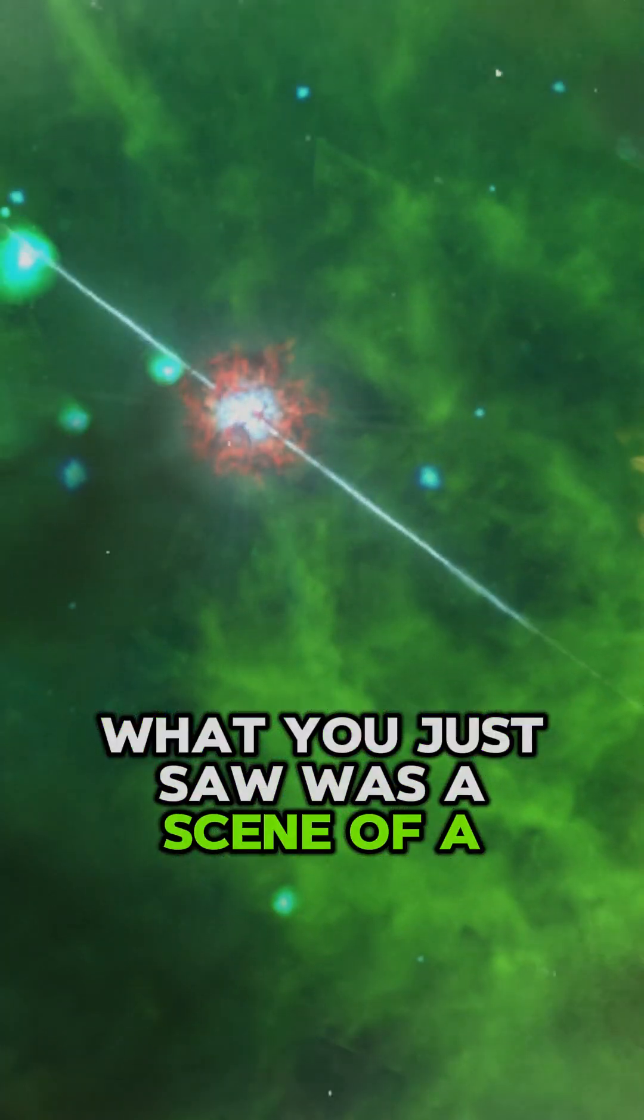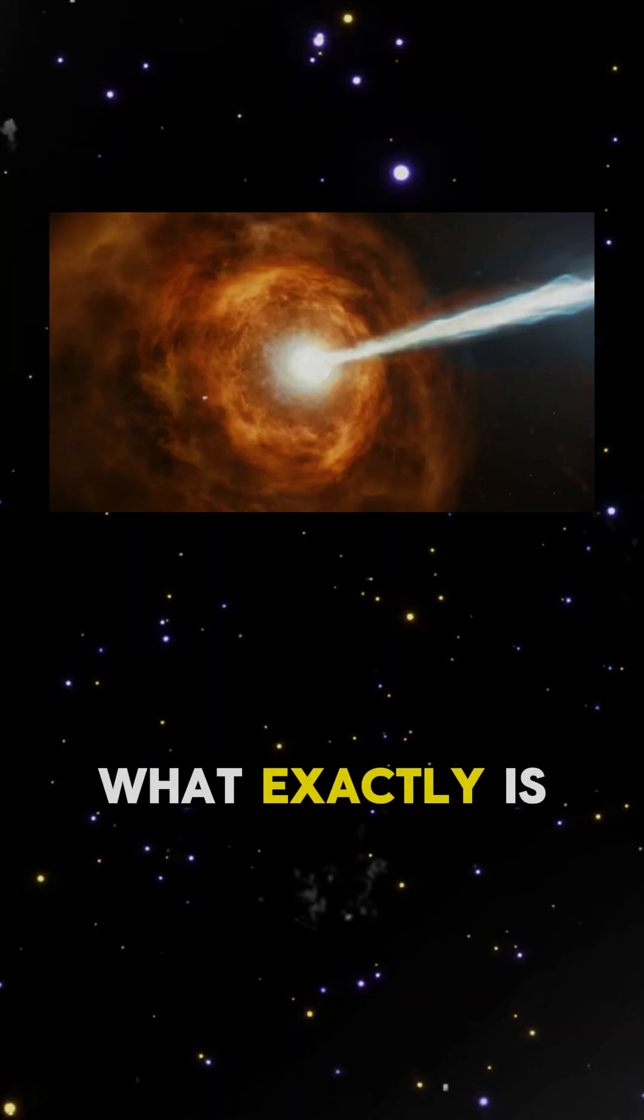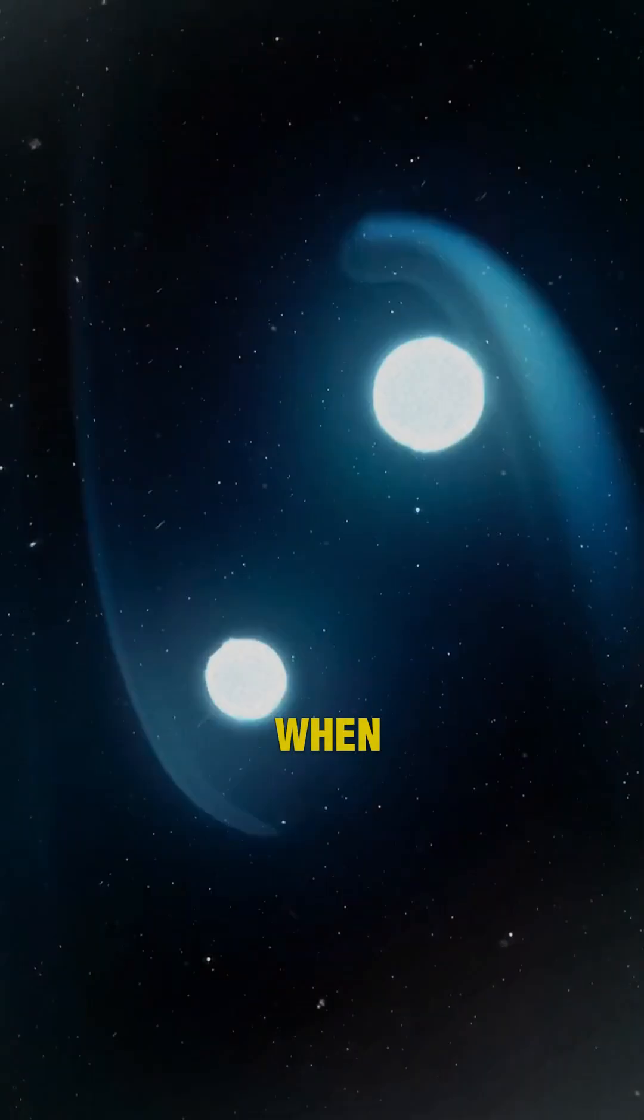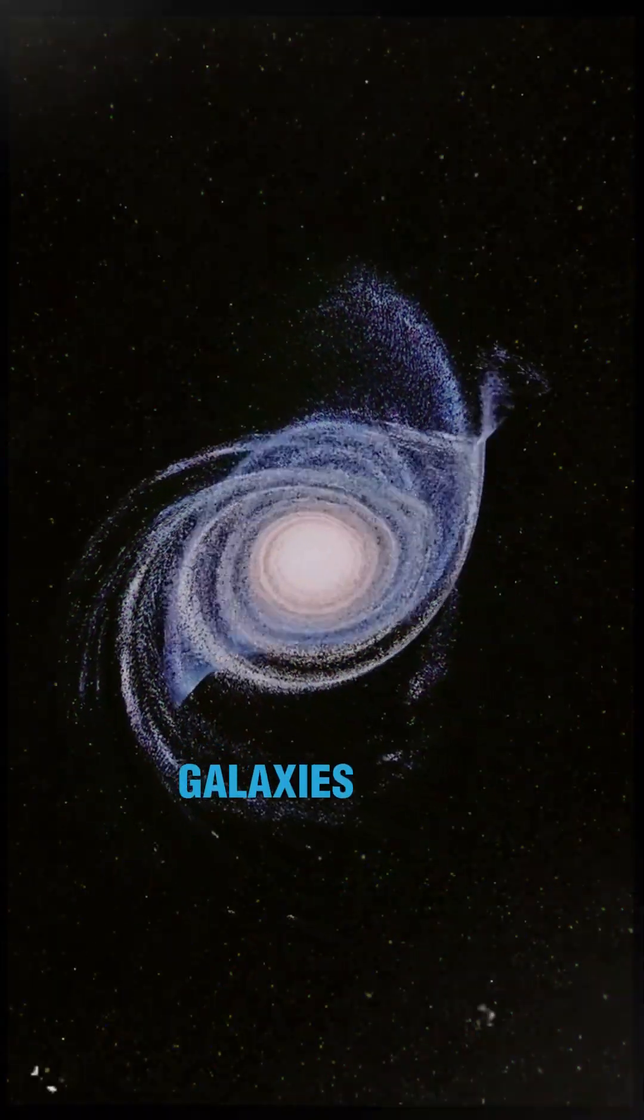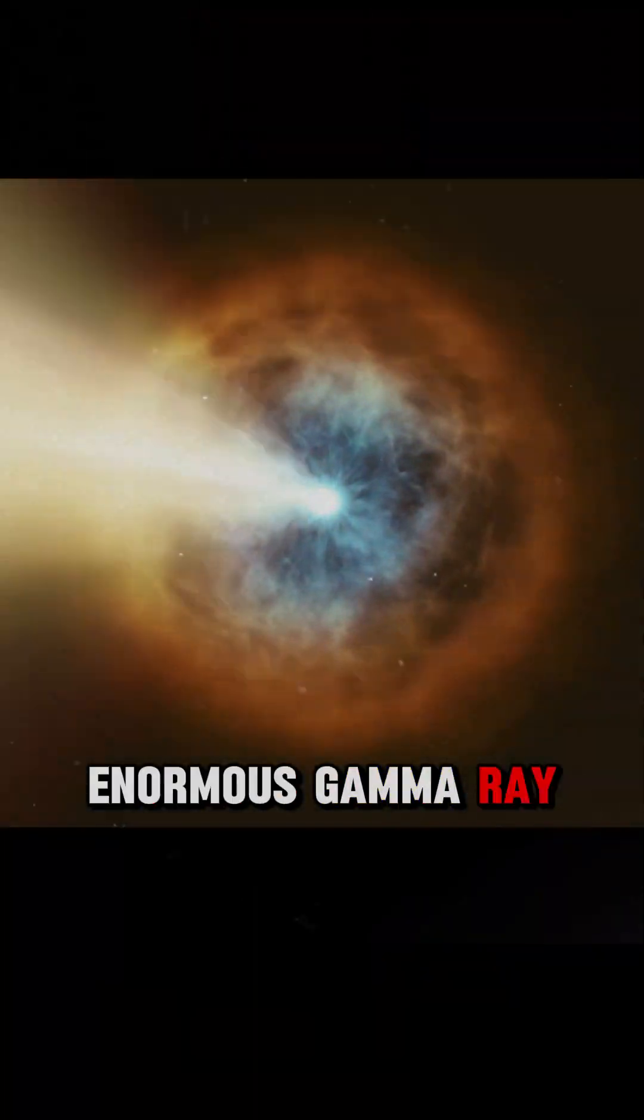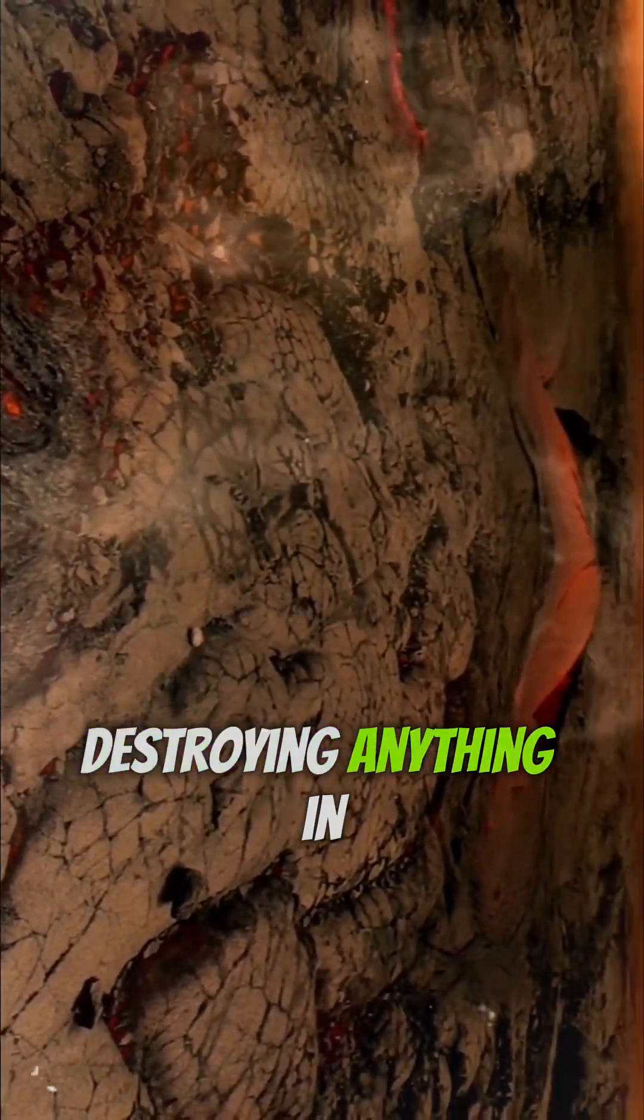What you just saw was a scene of a gamma-ray burst. What exactly is a gamma-ray burst? When a massive star collapses or galaxies collide, they release an enormous gamma-ray burst. These bursts can travel through space, destroying anything in their path.